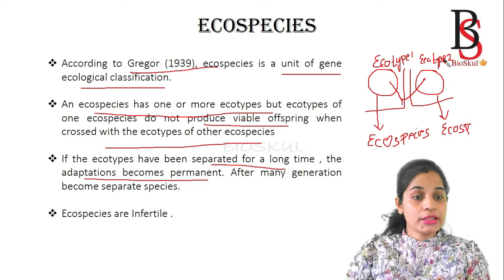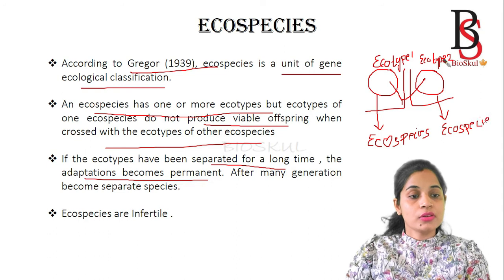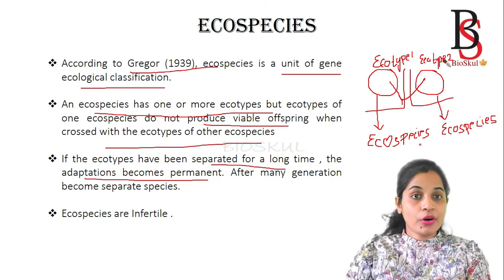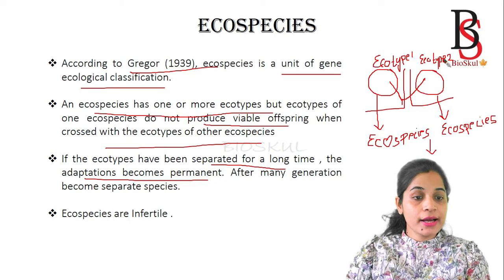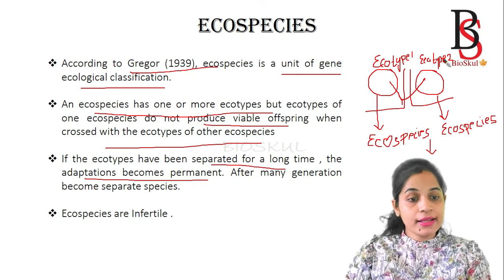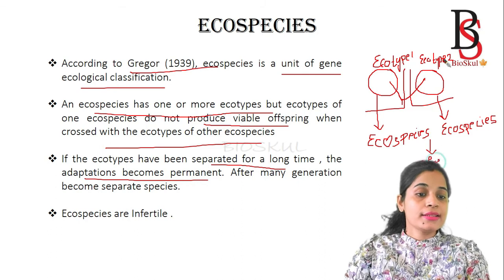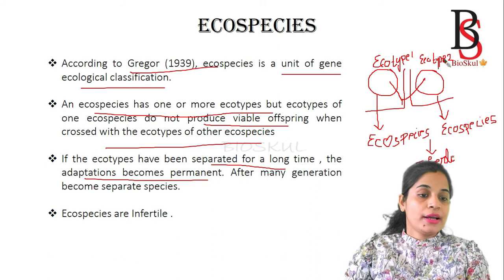As they develop into separate species, they cannot interact with each other. So Ecospecies are infertile with each other. Ecotypes, on the other hand, are fertile. But Ecospecies, having developed into separate species, are infertile when crossed with a different Ecospecies.